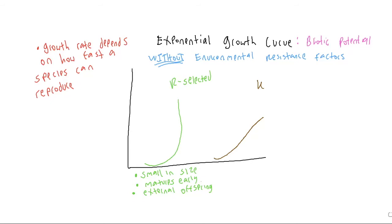If there are no environmental resistance factors, you can imagine how fast R-selected species become exponential — with close to 100% survival, their ability to reproduce would be overwhelming. R-selected species tend to be the ones you'd need to call pest control for, and they can become invasive really fast. Think ants, flies, termites, beetles — things that can reproduce very quickly.